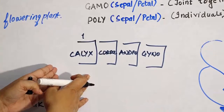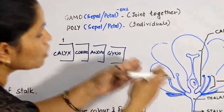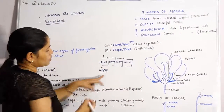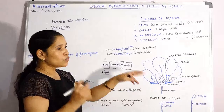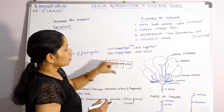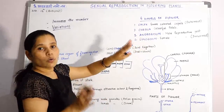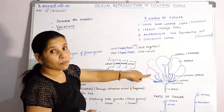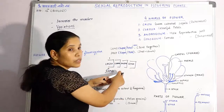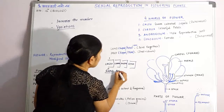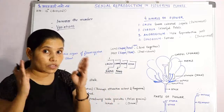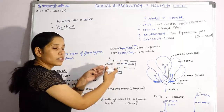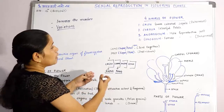The first whorl is the calyx. Calyx consists of green colored sepals — sepals are the members of this whorl. It is the outermost whorl. Now the second whorl is the corolla. Corolla consists of petals, and petals are colorful — they are the colorful part of any flowering plant.